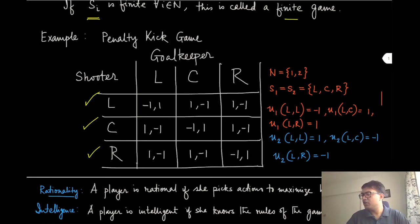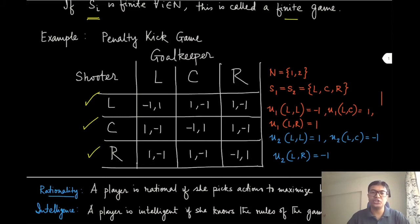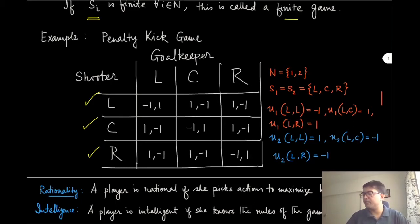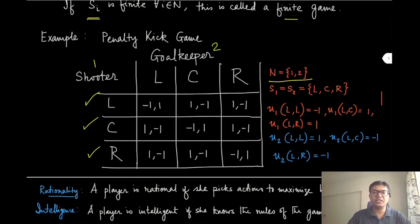All the diagonal entries of the payoff matrix are (-1, 1) — the shooter gets a negative payoff and the goalkeeper gets a positive payoff. For all non-diagonal elements, the shooter is shooting in a direction where the goalkeeper is not jumping, so the goal is scored — the shooter gets a positive payoff and the goalkeeper gets a negative payoff. There are only two players — the shooter (player 1) and goalkeeper (player 2) — and their strategy sets S_1 and S_2 are the same: {L, C, R}.